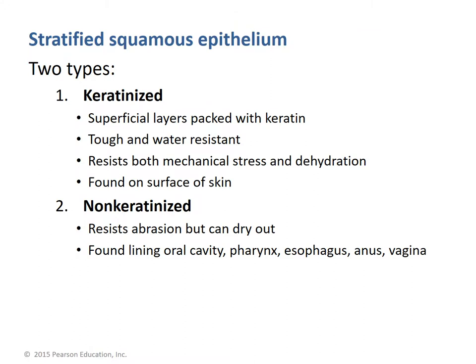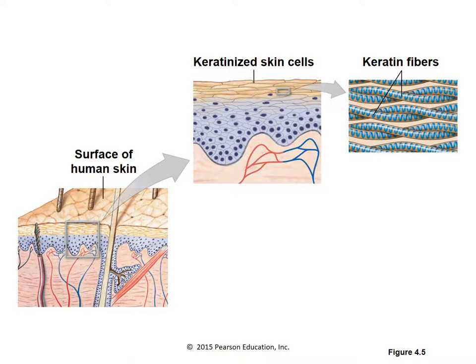Stratified squamous comes in keratinized and non-keratinized varieties. Keratinized is where the superficial layer is packed with keratin — it is tough and water resistant, resisting both mechanical stress and dehydration, and is found on the surface of the skin. This is what allows our skin to callus over and become tougher. Non-keratinized makes up the rest of the stratified squamous not typically found on the skin. It resists abrasion but can dry out, and is found in the oral cavity, pharynx, esophagus, anus, and vagina. Keratin fibers thicken the outer surface of the skin cell, making it much tougher.